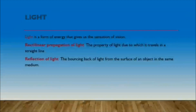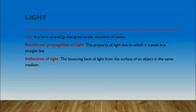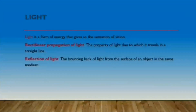Now, what happens when light falls on an object? The object may transmit, scatter, absorb, or bounce back the light depending on the types of objects on which it falls. The bouncing back of light or the returning back of light from the surface of an object in the same medium is known as reflection of light.